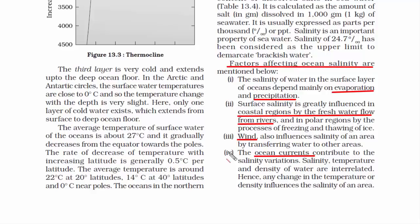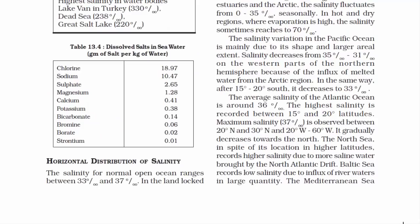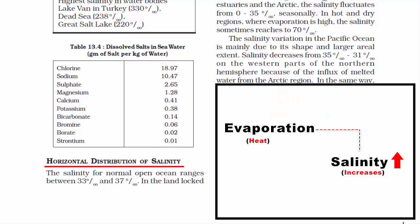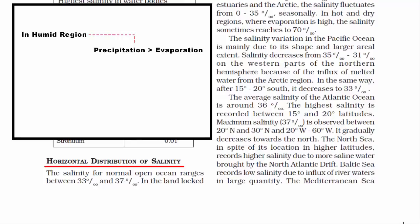These are the four factors that affect ocean salinity. Now let's look at the horizontal distribution of salinity. Evaporation increases salinity and precipitation reduces it, since precipitation is rainfall and rainfall is fresh water. In humid regions, precipitation exceeds evaporation. In arid and semi-arid areas, evaporation exceeds precipitation.